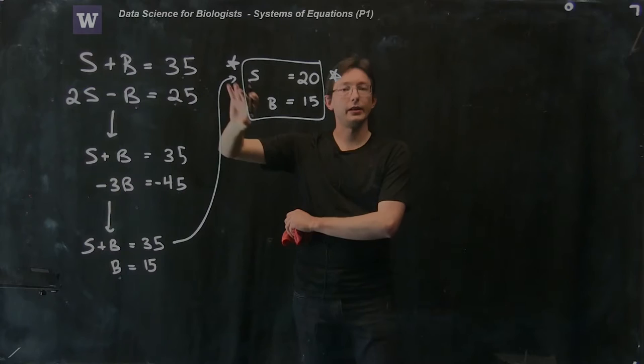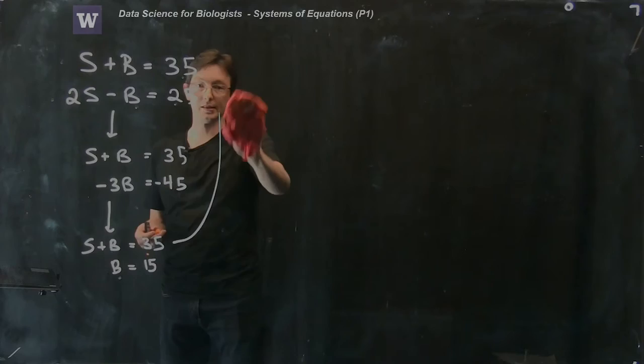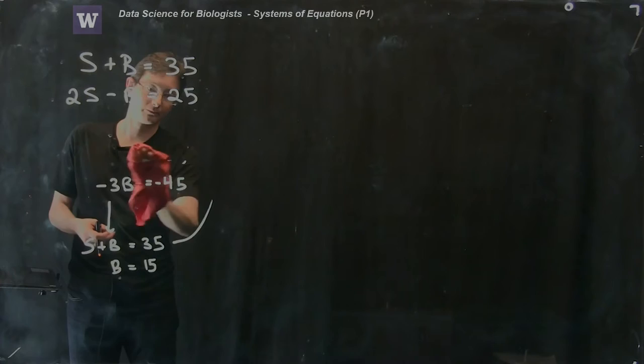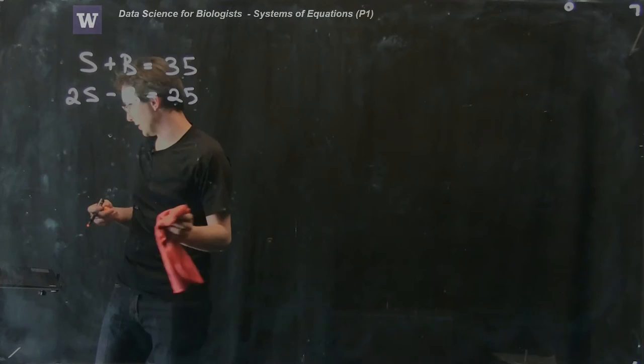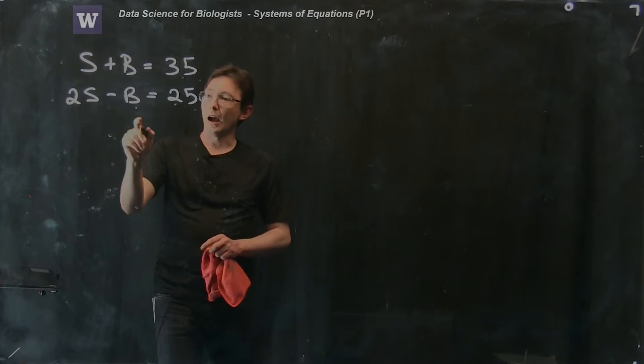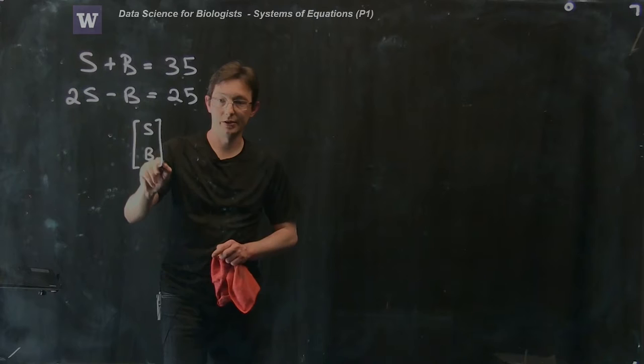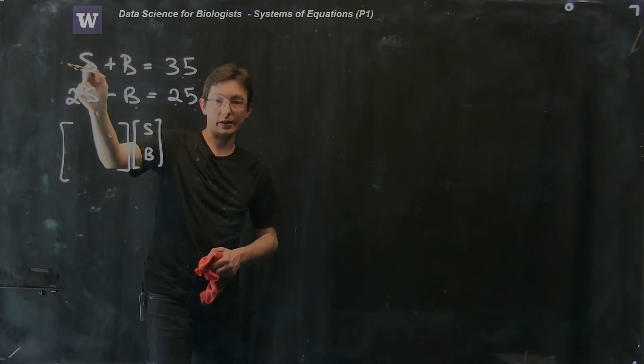Now in addition to just doing this by hand and keeping track of all of these equations, there's a few extra things I can do. What I could do is I could write this as a matrix system of equations, and we're actually going to find this to be much more useful in the future. I can create a vector that contains Sally's age and Bob's age and I could multiply that by this matrix and try to get all of the terms in the left two equations.